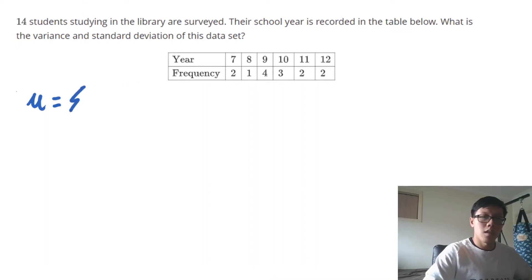And the mean is just the sum of each data point divided by n. And what I'm going to do is multiply each unique value by its frequency just to save a little bit of time.